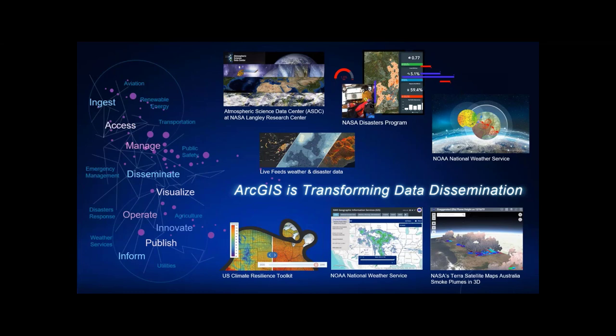ArcGIS is transforming data dissemination. Shown here are examples of using GIS to disseminate massive volumes of weather and climate data. The Atmospheric Science Data Center at NASA Langley Research Center leverages GIS for processing, archival, and distribution of NASA solid earth science data. Esri also supports enterprise GIS operations within NOAA's National Weather Service, the multi-agency National Ice Center, the U.S. Navy, and the U.S. Coast Guard. The National Ice Center's satellite image processing and analysis system is guided by ArcGIS sea ice and iceberg maps, helping ensure safe navigation in polar regions. You will get to see a variety of these data types being disseminated within a fully web-enabled GIS.